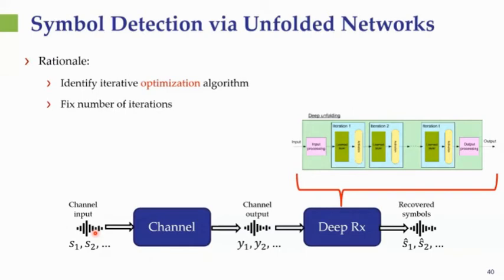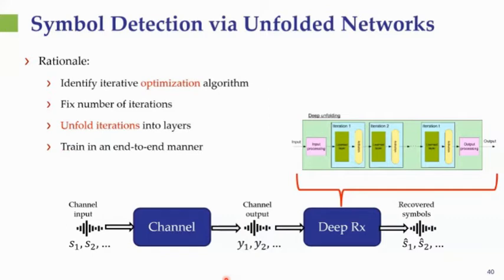For the unfolding case, the rationale is somewhat different. Instead of identifying what network architecture does the symbol detection task best, we identify an iterative optimization algorithm suitable for the task under the considered channel model, fix the number of iterations, and unfold each iteration into a layer. We end up with a deep neural network that imitates the iterative algorithm and train the whole thing end-to-end. By showing this architecture a sufficient number of labeled samples — pairs of channel outputs and corresponding symbols — the resulting architecture should carry out this optimization reliably.